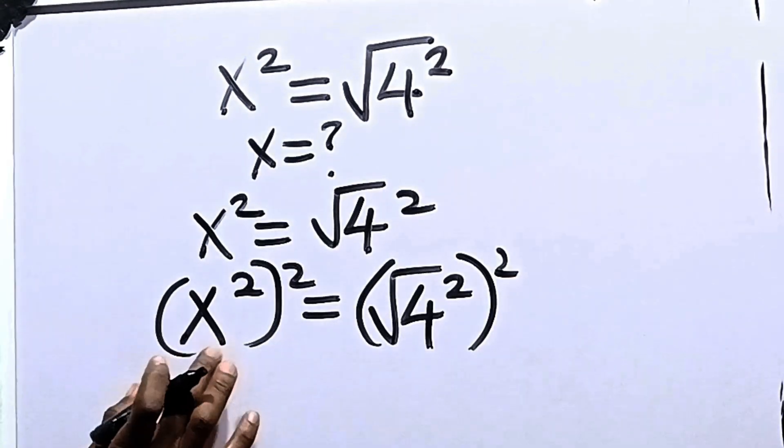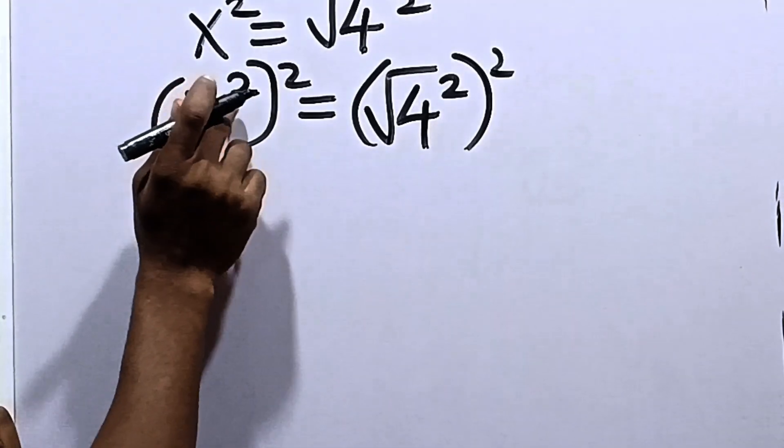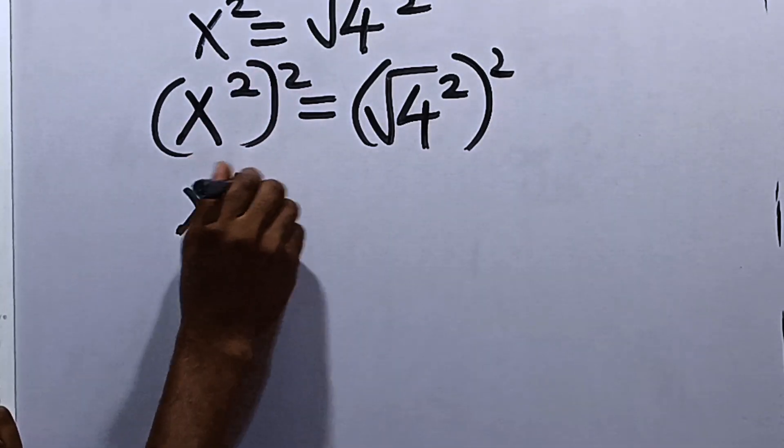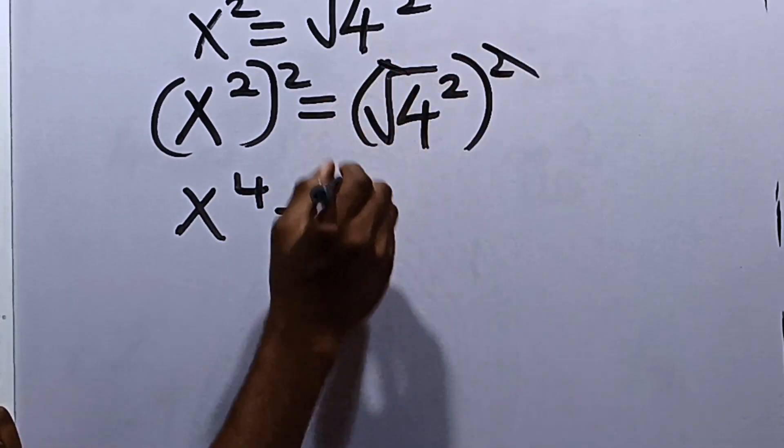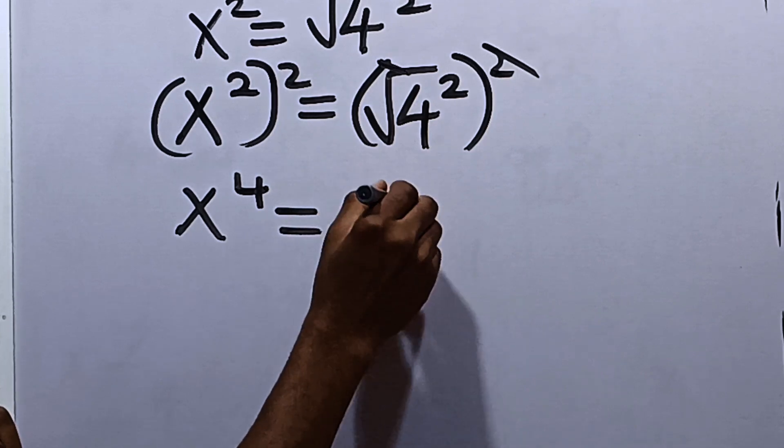Now, if you look closely here, we are going to have x raised to the power of 2 squared, the same thing as x raised to the power of 4, so it can be equal to, square will cancel square root, so we are left with 4 squared.